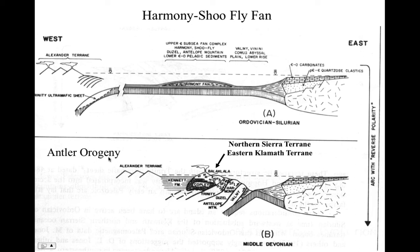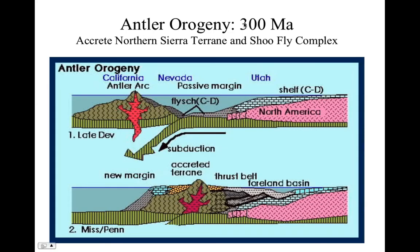And then as time goes on, the Antler orogeny is going to have these volcanic units — the Trinity Ophiolite up in the Klamath Mountains — these island arc rocks, which are also in the Klamath Mountains. Shoofly formations here have shoofly 1, 2, and 3, various units in the shoofly formation. They're all going to be thrust over the top of the edge of North America during this Antler orogeny. So around 360–300 million years ago, we're going to accrete the northern Sierra terrain, the shoofly complex, and that eastern Klamath mountain terrain.